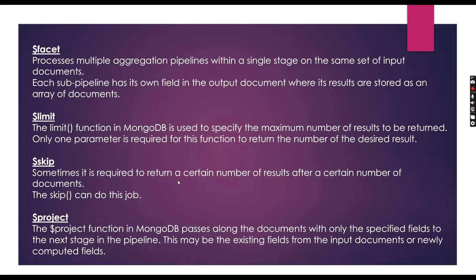Next is the skip operator. Sometimes we need to return a certain number of results after skipping a number of documents. For example, after getting the first 10 documents using limit, if we want the next 10, we use skip to do that. Finally, we use the project operator to shape our documents — it passes along documents with only the specified fields to the next stage, so we can control which fields are returned in our output.